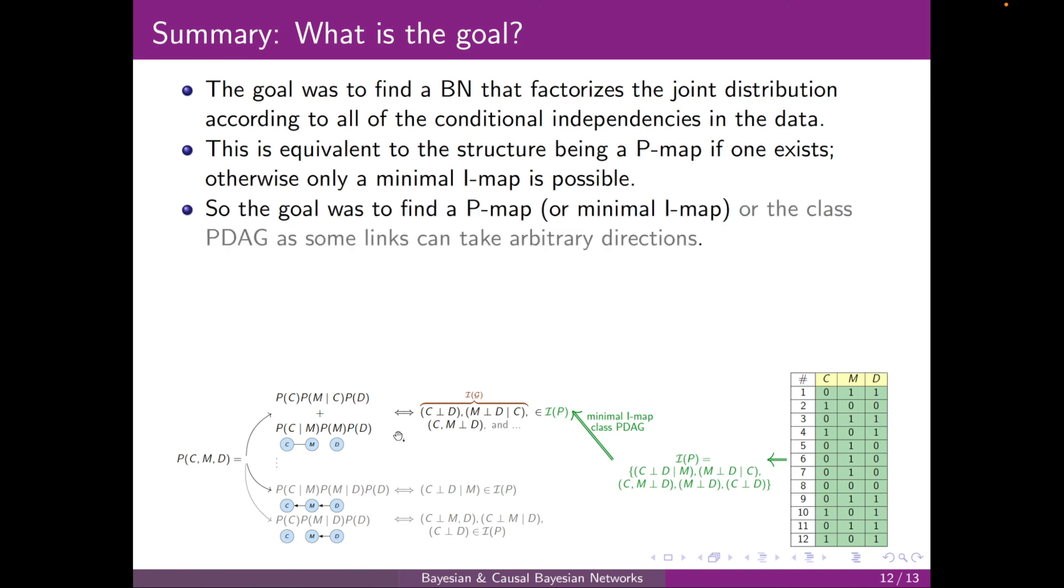So the goal was really to find a P-map or minimal I-map or the class PDAG because some of the links could take arbitrary directions from the data. But just note that what we did in the representation chapter was just conditions for checking whether a given network,